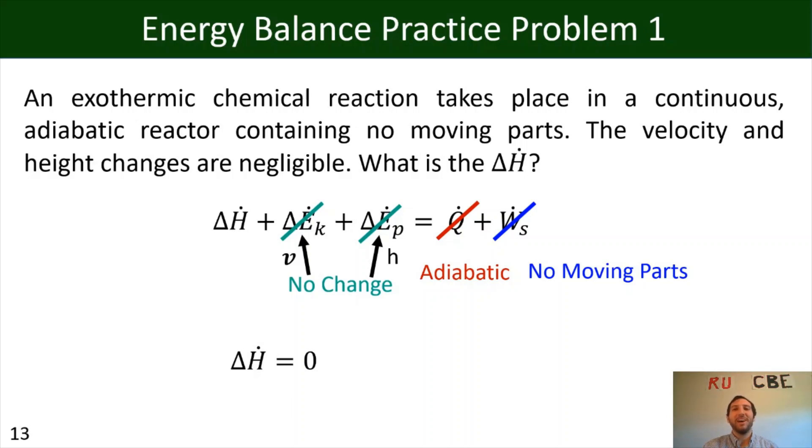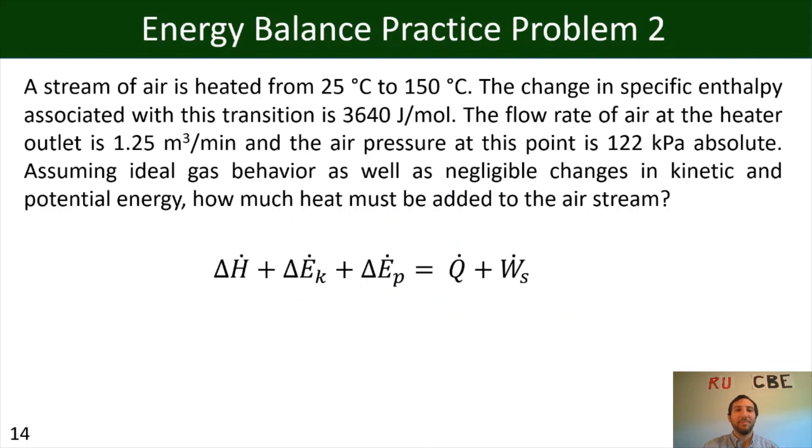So we've got a stream of air being heated from 25 to 150 degrees Celsius. The change in specific enthalpy associated with this transition is 3,640 joules per mole. The flow rate of air at the heater outlet is 1.25 meters cubed per minute, and the air pressure at this point is 122 kPa absolute. All right, and so assuming ideal gas behavior as well as negligible changes in kinetic and potential energy, how much heat must be added to the airstream?